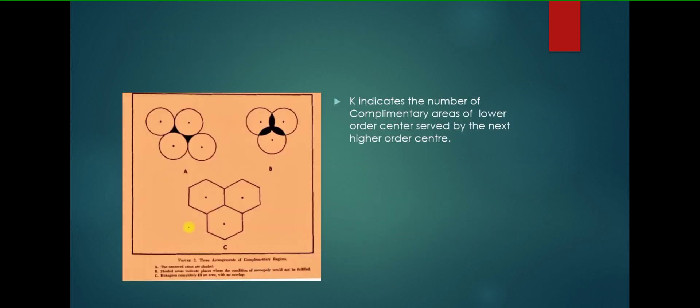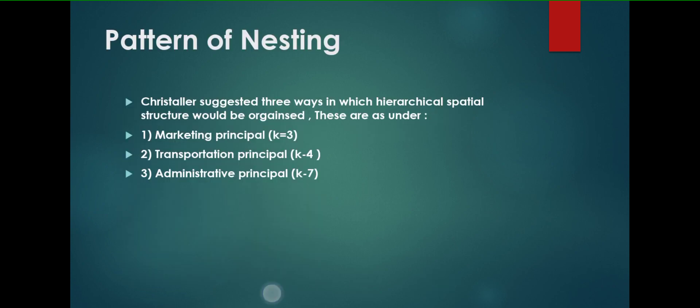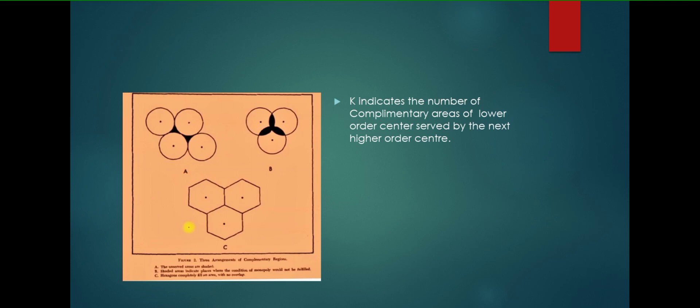Then let's come to the pattern of nesting. Christaller suggested three ways in which hierarchical spatial structure would be organized. These are: marketing principle, called K3; transportation, K4; and administrative principle, K7. K here indicates the number of complementary areas of lower order center served by the next higher order center.